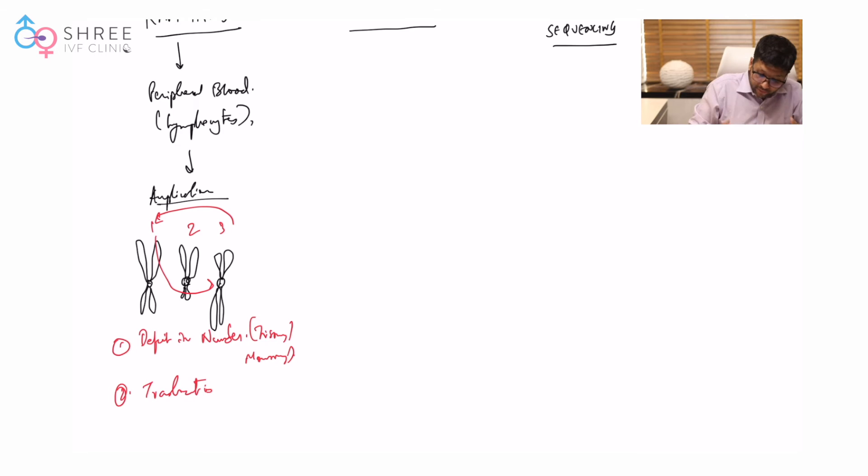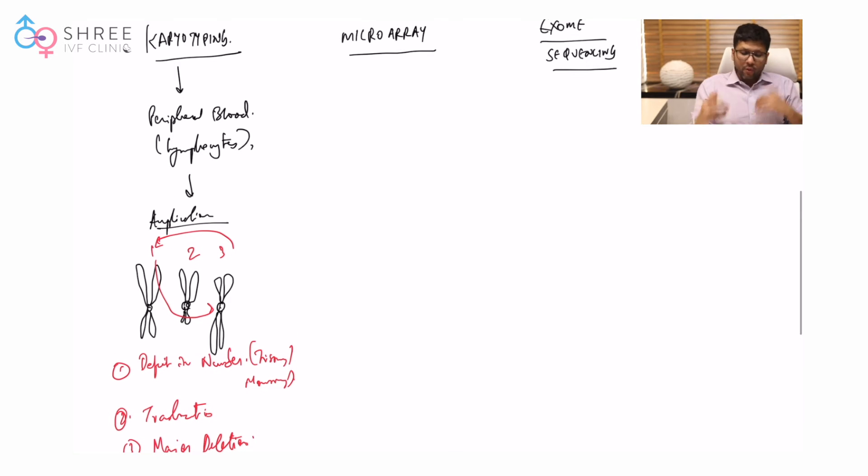It will also help us understand if there is any specific major deletion. When your standard karyotyping fails, you switch to microarrays. Just remember one thing - when you are looking at peripheral bloods and lymphocytes, this is live tissue. You cannot do karyotyping unless you have live tissue. The advantage of microarrays is you can even do it on dead tissue, but contamination is a problem.